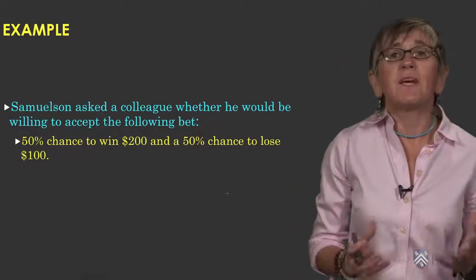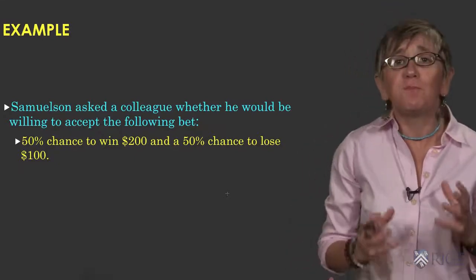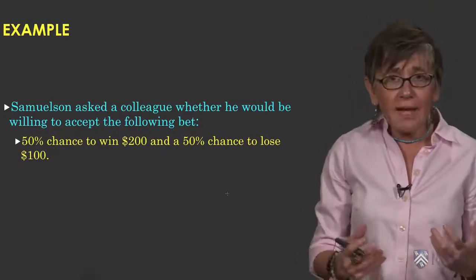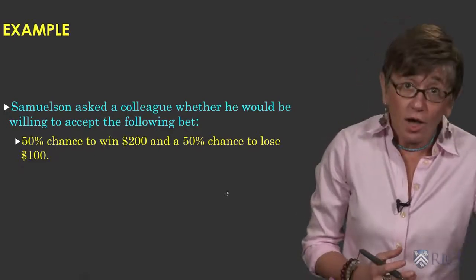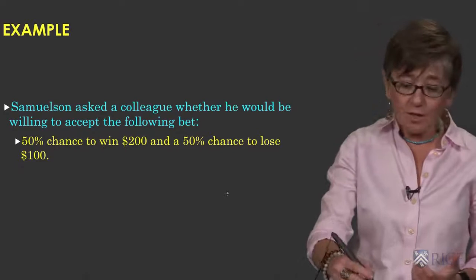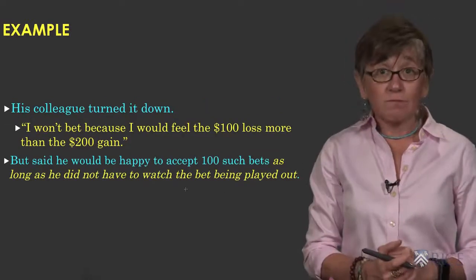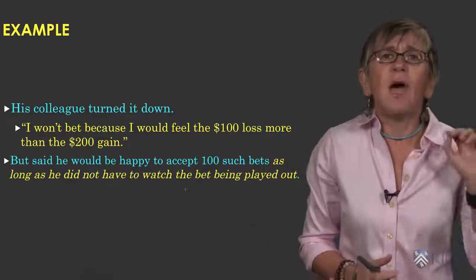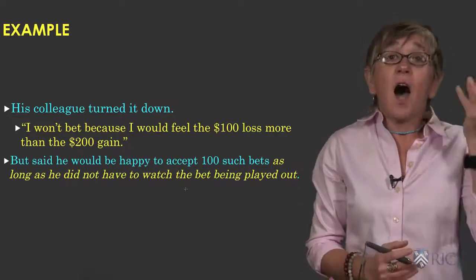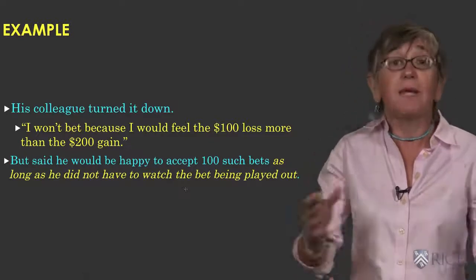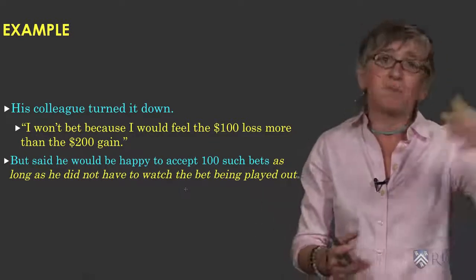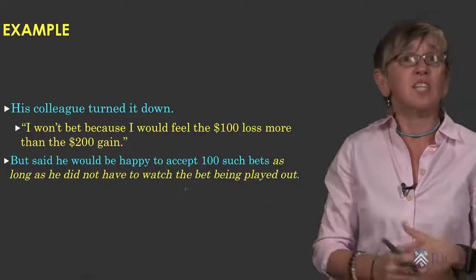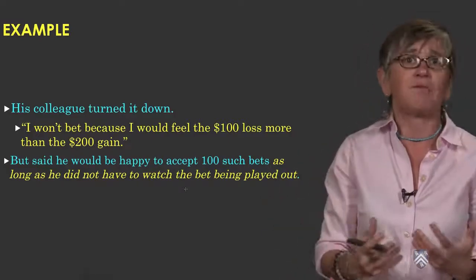To understand how myopic loss aversion works, consider the problem first posed by the economist Samuelson. Samuelson asked a colleague whether he would be willing to accept a bet that has a 50% chance of winning $200 and a 50% chance of losing $100. His colleague turned it down, saying that he would feel the loss of $100 much more than the $200 gain. But he also added that he would be willing to take the bet 100 times, as long as he did not have to watch the bets being played out. This provoked Samuelson into writing a theorem showing that his colleague was completely irrational — his behavior being inconsistent with expected utility theory.